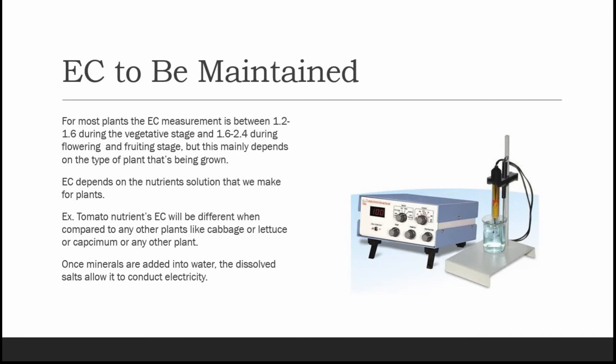What EC has to be maintained for your plants? For most plants, the EC measurement is between 1.2 and 1.6 during the vegetative stage. For the flowering and fruiting stage, EC has to be maintained between 1.6 and 2.4, but this mainly depends on the type of plant being grown. For example, tomato nutrients EC will differ from cabbage, lettuce, capsicum, or any other plant.